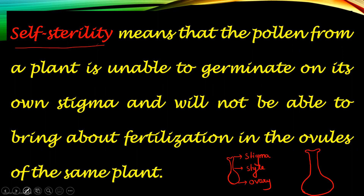I'll use a different color for pollen. The pollens land on the stigma. Normally, they grow — the pollen tube germinates, carrying the tube nucleus and the generative nucleus. It will germinate and finally reach the embryo sac where the egg apparatus is: the antipodal cells and the synergids on the two sides.